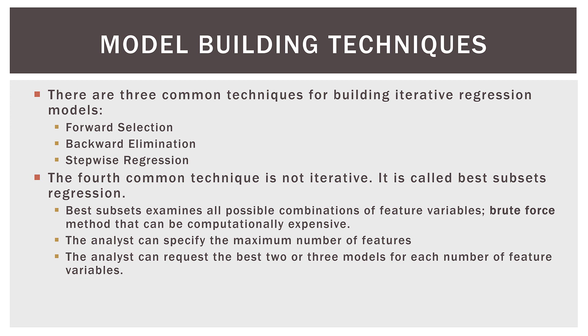You, the analyst, can also request the two or three best models for each number of feature variables. So let's say you had the eight model example again — you could tell the software: give me the three best single variable models, give me the three best two variable models, give me the three best three variable models, and so on. That helps limit the extraneous output you might get if you looked at all those models. And I'll show you how big they can get here in a second.